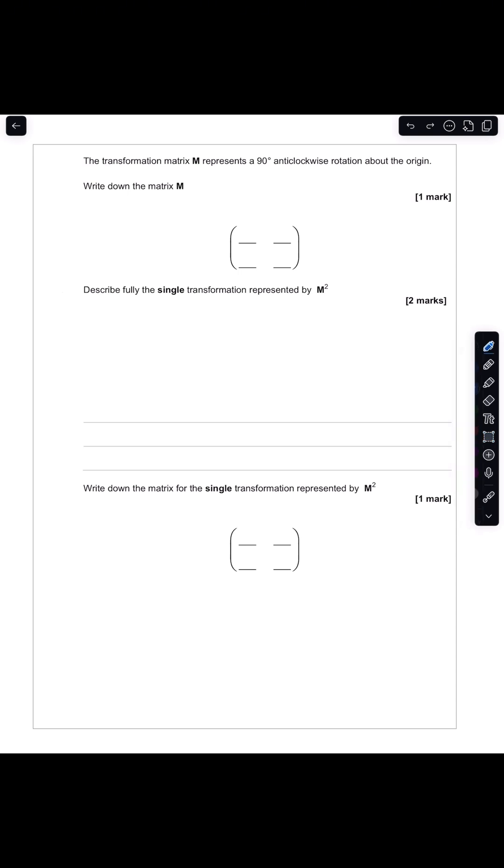The first thing we need to do is write down our identity matrix. The identity matrix is 1, 0 and 0, 1, which I'm going to write like this. And I'll also write it as a matrix. So that's 1, 0 and 0, 1.